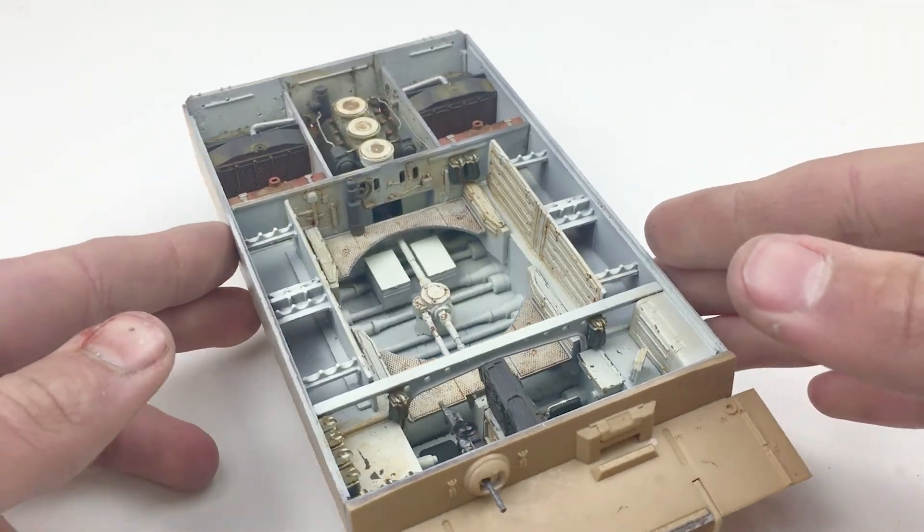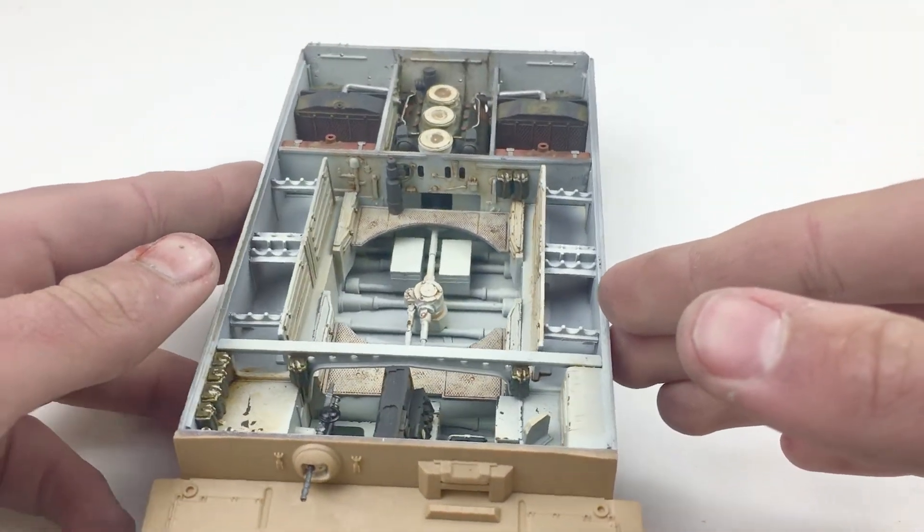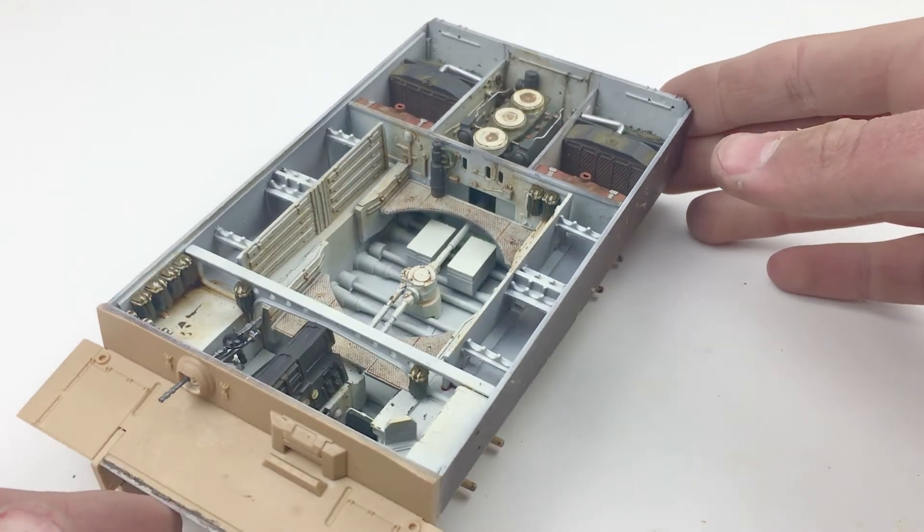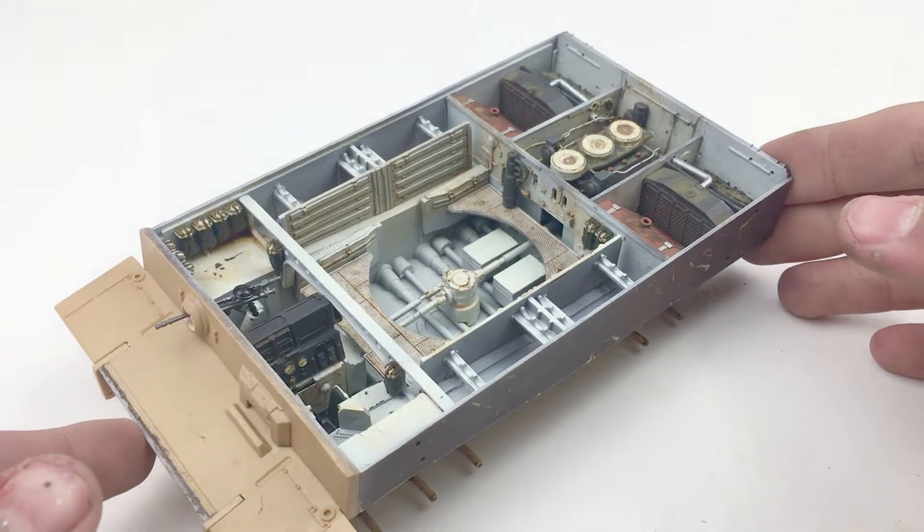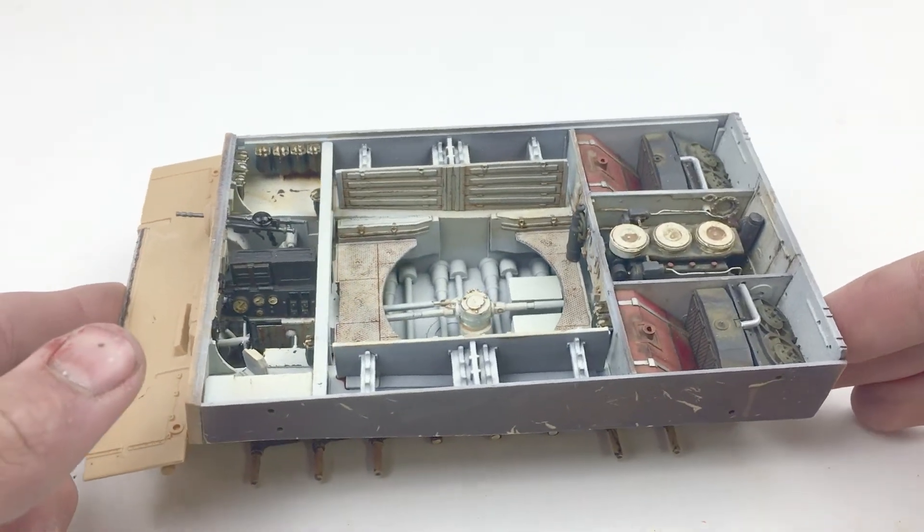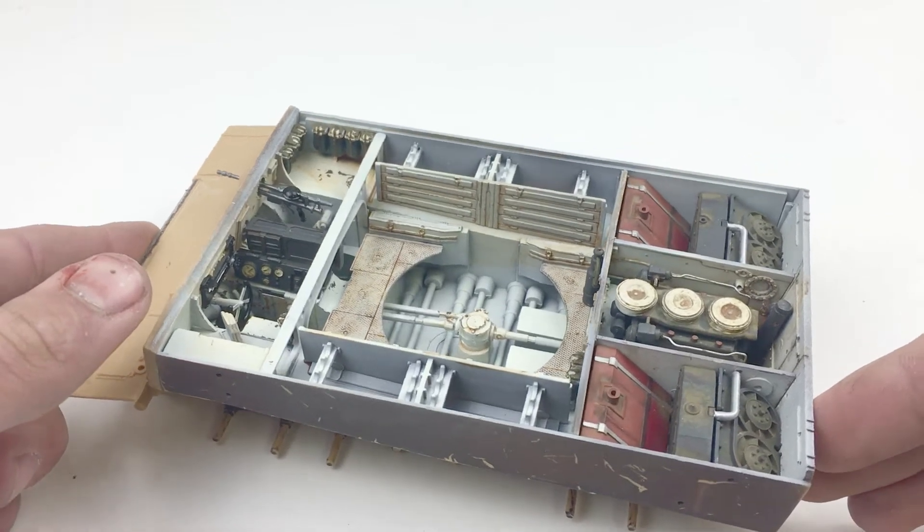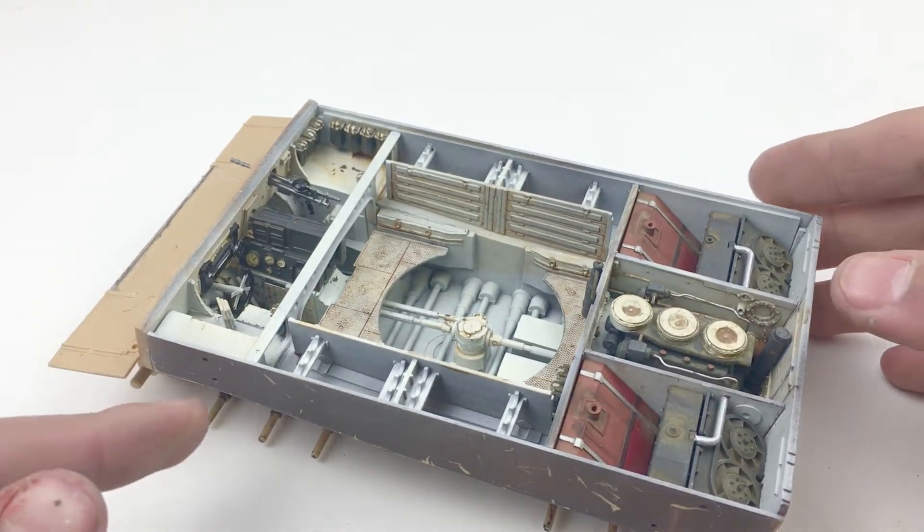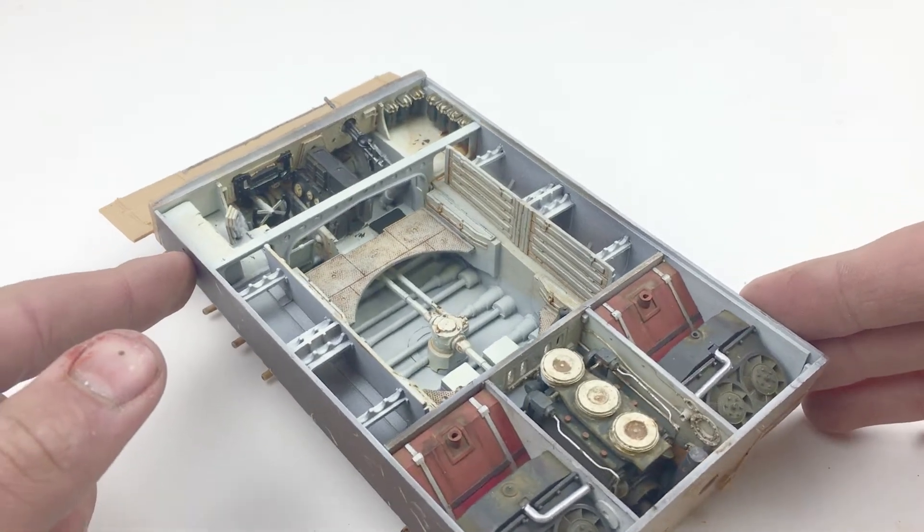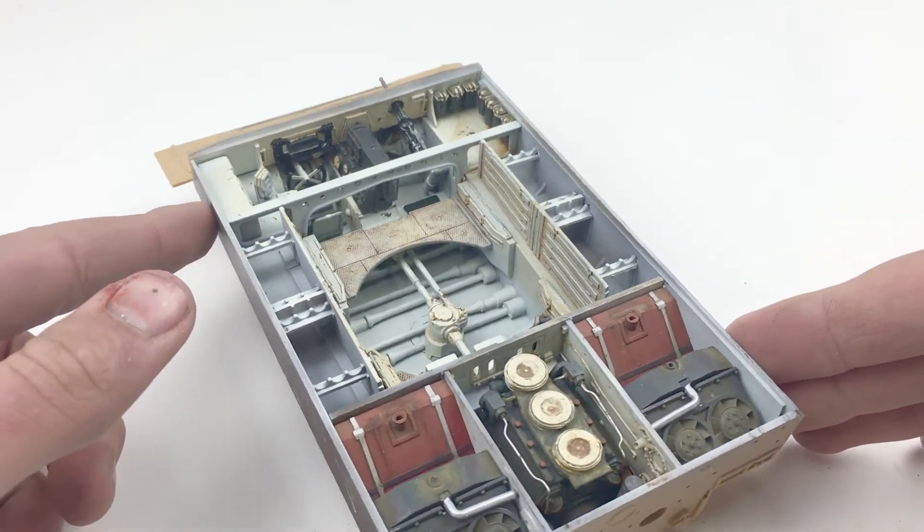Hi guys and welcome back to Skill Studio. Today we're going to be finishing this Tiger's interior by painting its engine, guns, and periscopes. I'm also going to be going over chalk pigments, graphite polishing, and glassy effects. And yes, after this episode we will start work on the exterior of this big cat. So grab a snack, sit back, and let's get started.